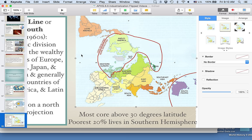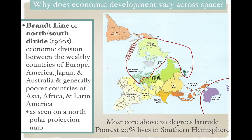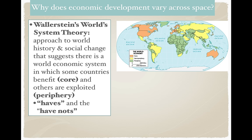Think about peripheral vision — your side vision — as a way to understand the periphery. The core countries created systems where the periphery countries are dependent upon the core. Core countries would take raw materials from these regions, bring them back, manufacture them, and then sell them back. That was the economic system of the 1800s. The Brandt Line, or north-south divide, represents the division between the wealthy countries of Europe, America, Japan, and Australia at 30 degrees north latitude versus the poorest countries living on the periphery.